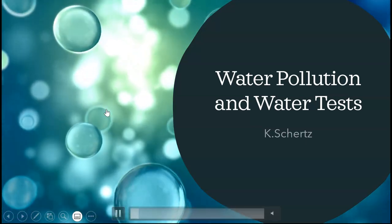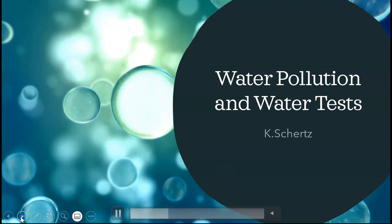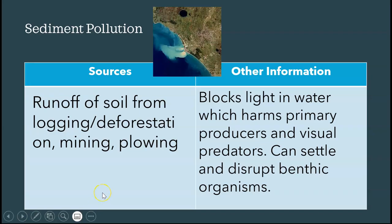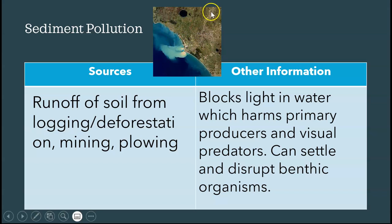The first type is sediment pollution. You can see from the picture that we have land and a river. The river is bringing sediments into the ocean, which you can see by the lighter color in the image.